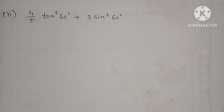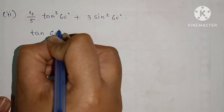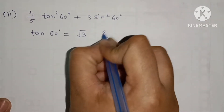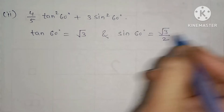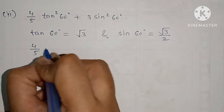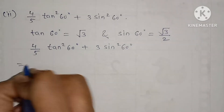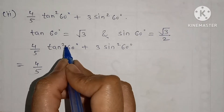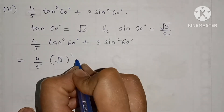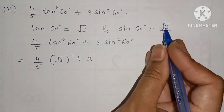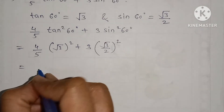Second part: 4 upon 5 tan²60 plus 3 sin²60. The value of tan 60 is root 3 and the value of sin 60 is root 3 upon 2. Now put the values: 4 upon 5 multiplied by (root 3)² plus 3 multiplied by (root 3 upon 2)².